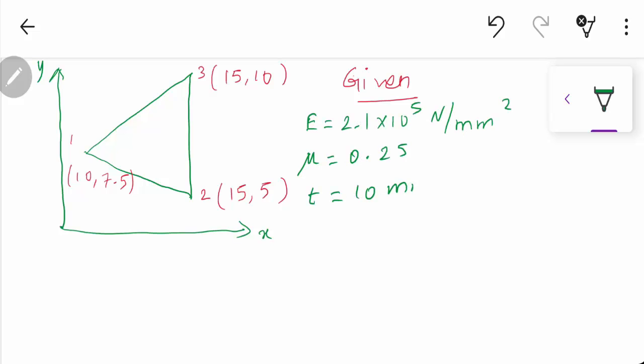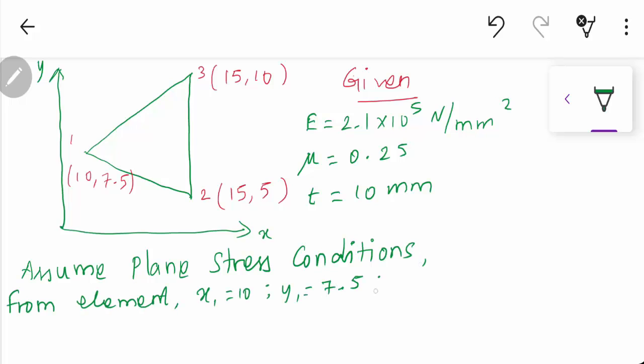Good day to all. Today we are going to see the stiffness matrix calculation for the given element. Node numbers one, two, three are given. The corresponding coordinate system is also given. Young's modulus, Poisson's ratio, and thickness of the element are also given. We are assuming plane stress conditions. From the element we can write down x1, x2, x3, y1, y2, y3.